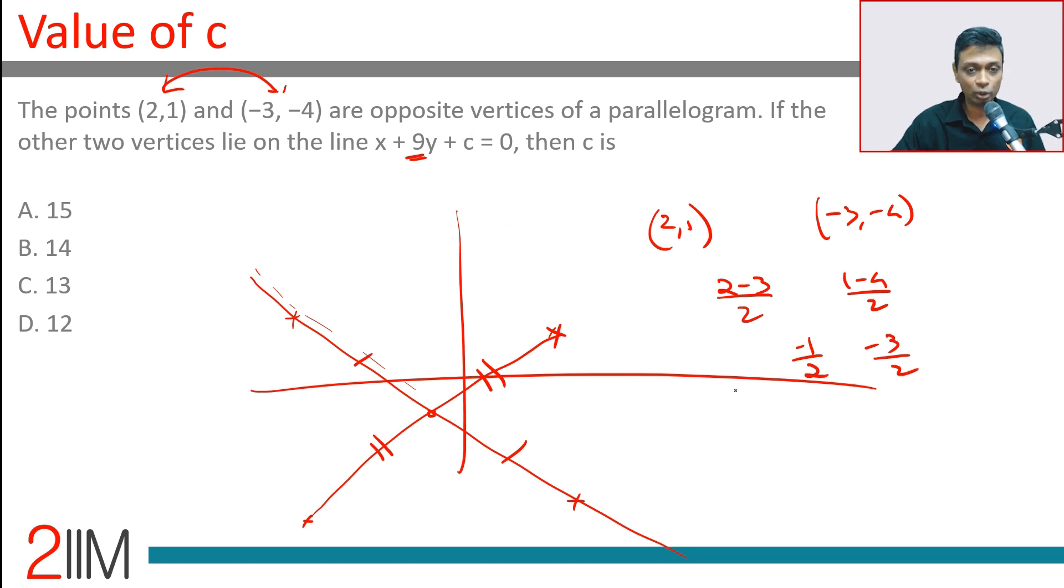Plug that in here: minus half plus 9 into minus 3 by 2 plus c is 0. Minus half minus 27 by 2 plus c is 0. Minus 28 by 2, minus 14 plus c is 0. c is 14.